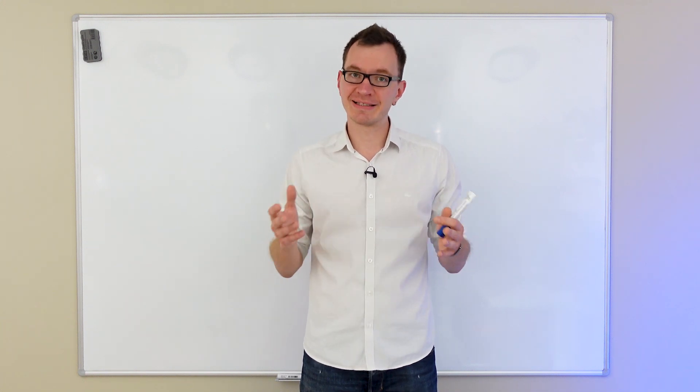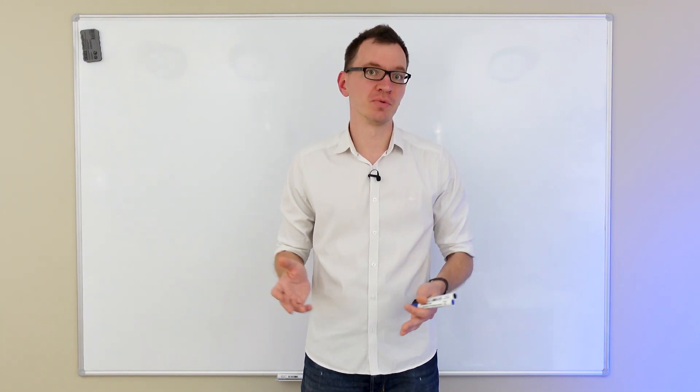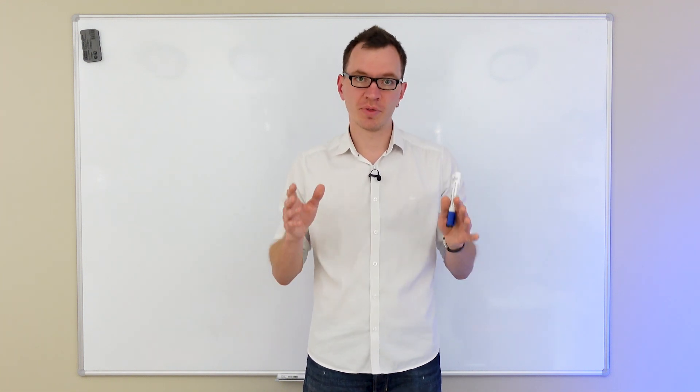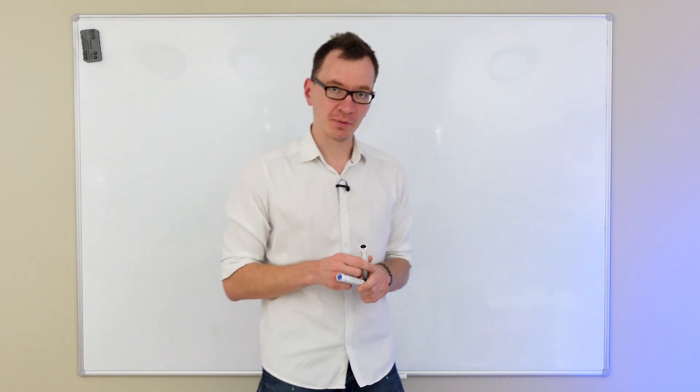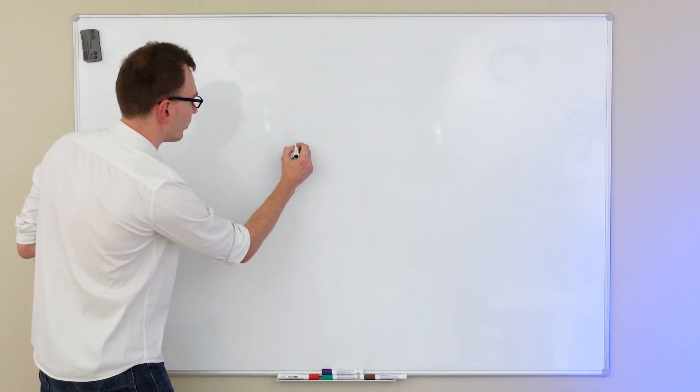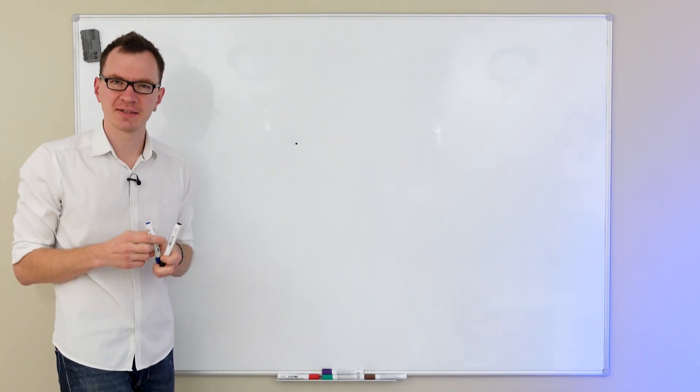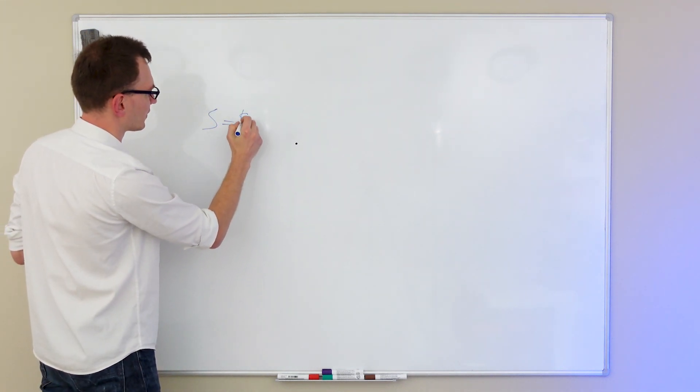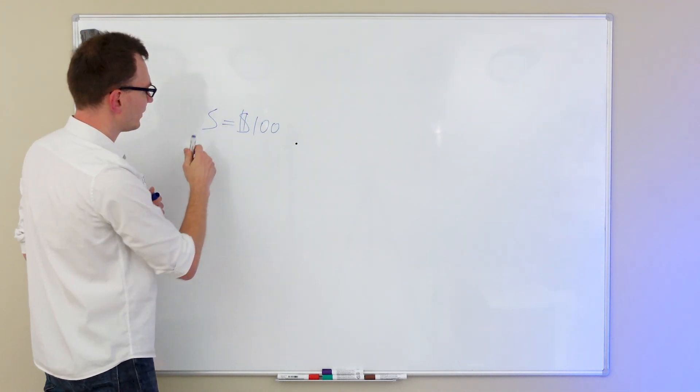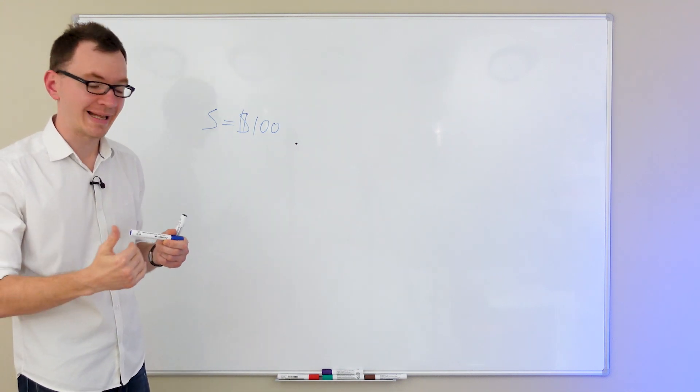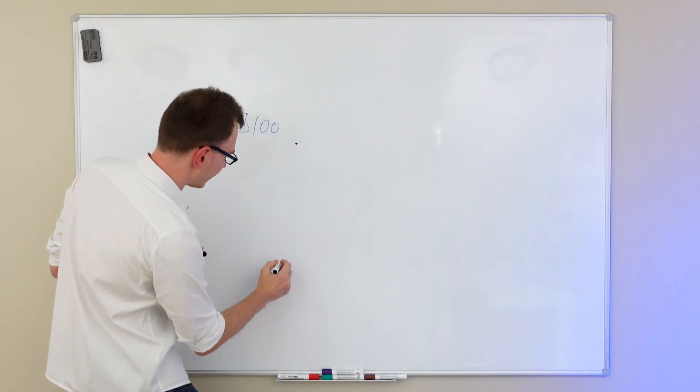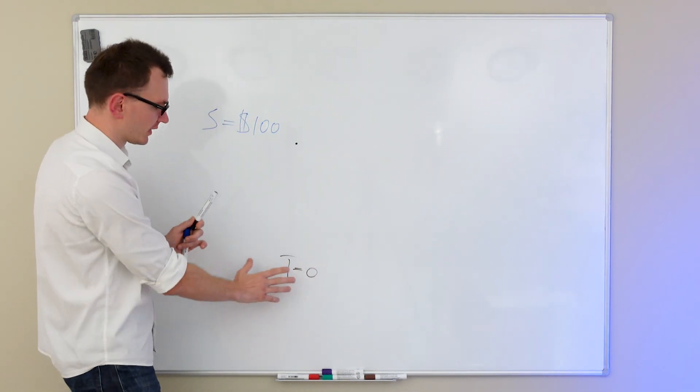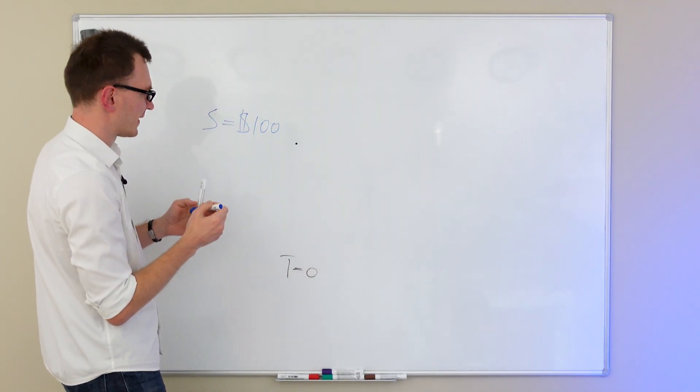Now, before we do something exciting and actually start pricing options within the Binomial Model, let's first outline the general framework within which we're going to work. In this framework, we have one asset. Let's assume this asset is a stock and the current price of this asset is 100 dollars. So, S equals 100. That denotes the stock price right now. Currently, we are in time equals zero. That's the present.